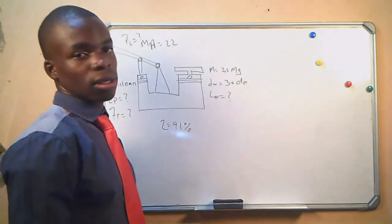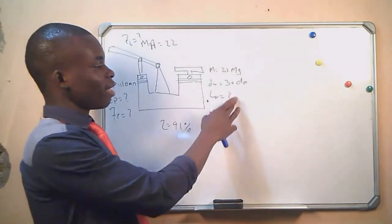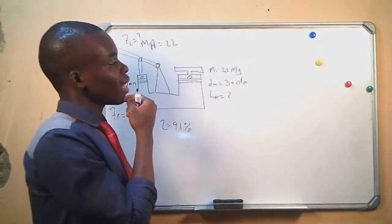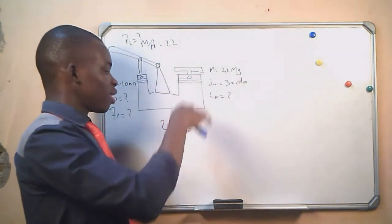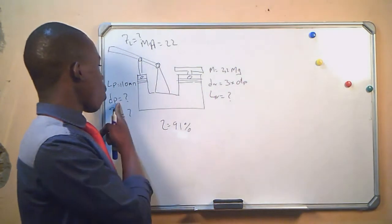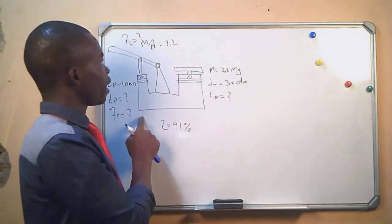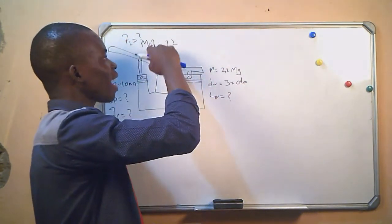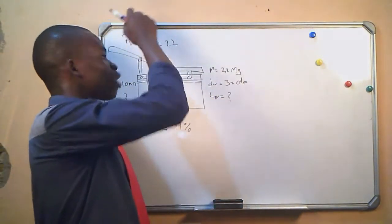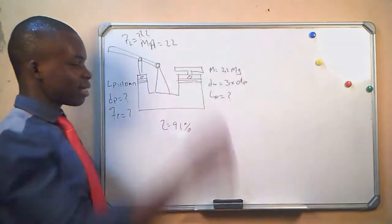The information we are given: the mass of the object in the ram, the diameter of the ram as three times the diameter of the plunger, the stroke length of the plunger as 110 mm, the efficiency of the system as 91 percent, and the mechanical advantage between the plunger and the lever as 22. We are not given the force of the plunger or the diameter of the plunger, and the force of the lever is what we need to calculate.